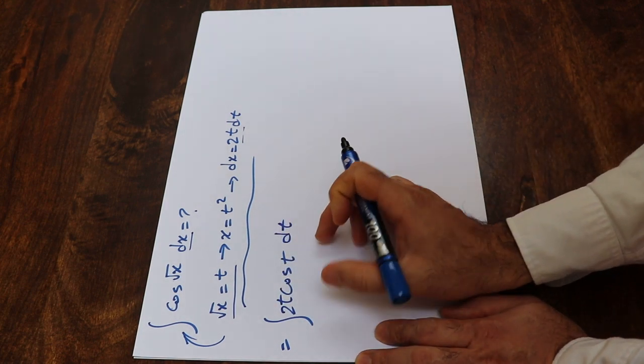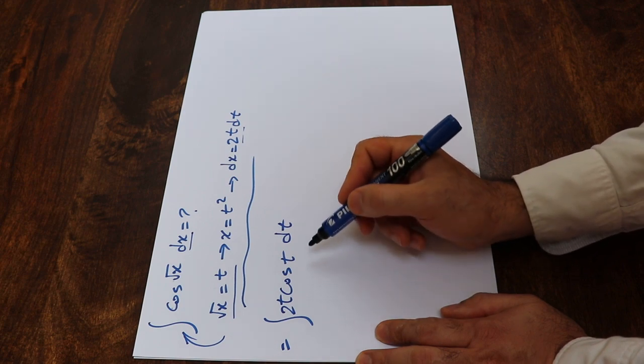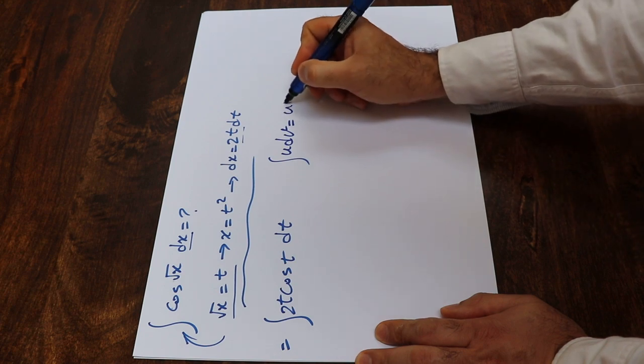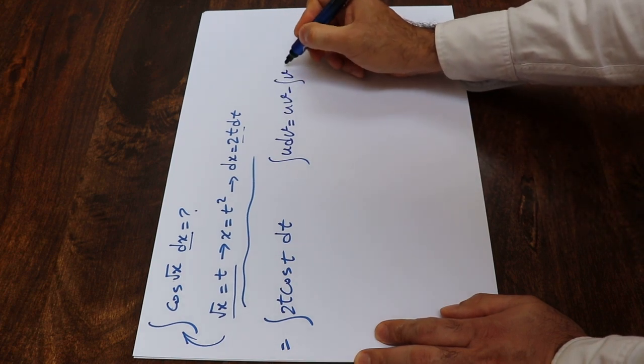And now to solve this integral, you need to apply the formula for integration by part. That is, the integral of u dv is equal to uv minus integral of v du.